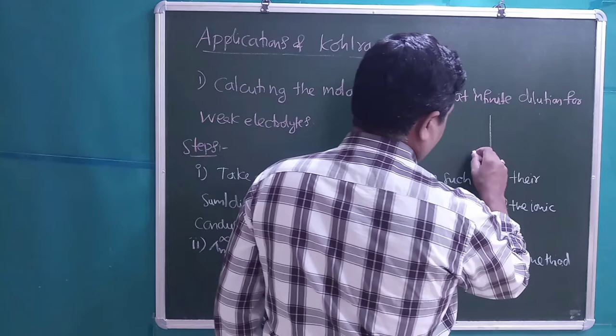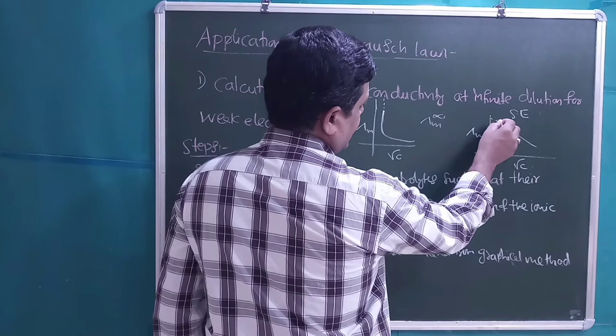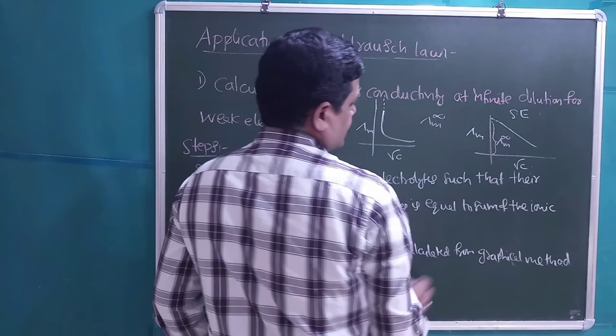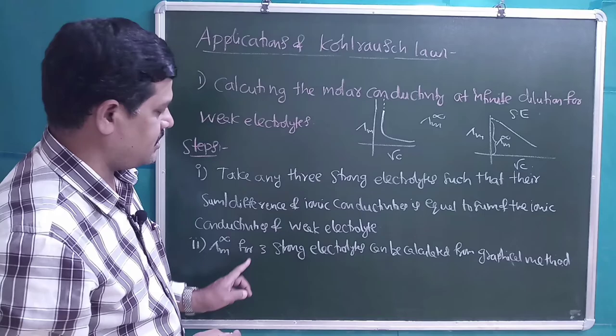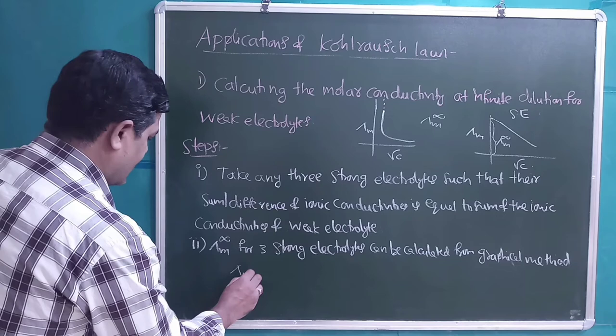For the graph of √C versus λm for strong electrolytes, we get a straight line. So λ°m can be calculated by extrapolating the graph — the y-intercept gives the molar conductivity at infinite dilution. For weak electrolytes, we must use Kohlrausch's Law.